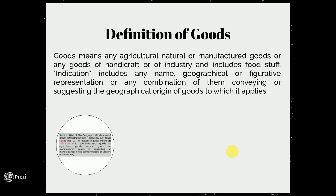Agricultural goods include crops; natural goods are those which automatically grow on our planet earth, like herbs; and manufactured goods are the products manufactured in small scale or large scale industries, or any goods of handicraft done by a particular group of people. It also includes foodstuff — any dish, delicacy, or beverage which has been developed in a particular area or country.